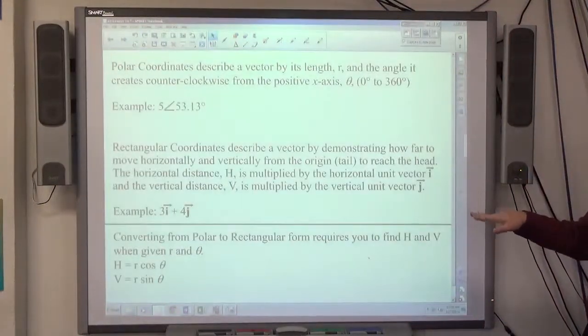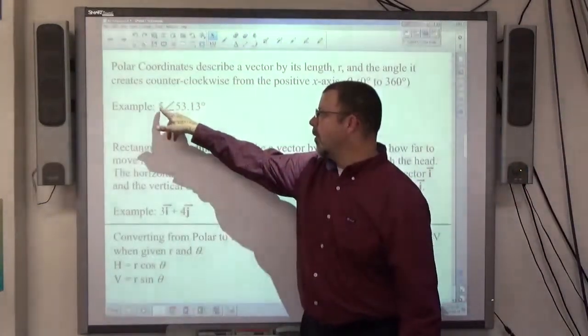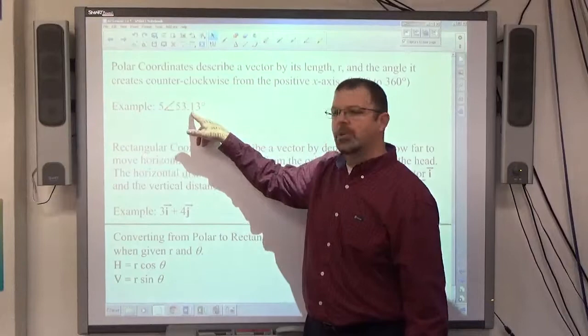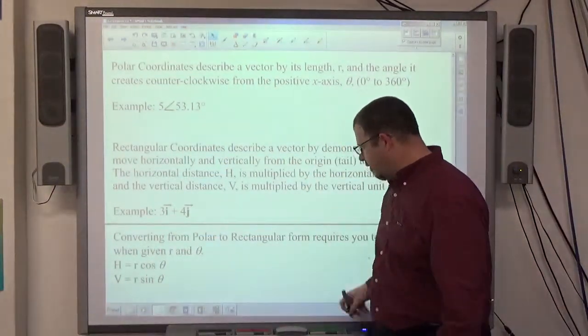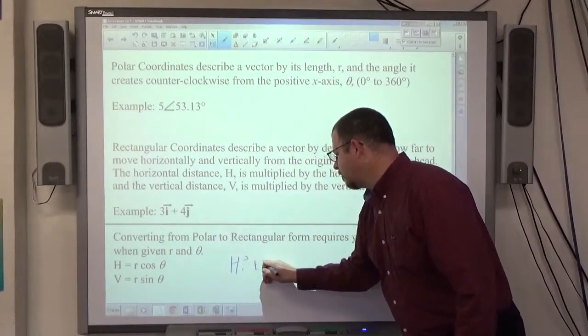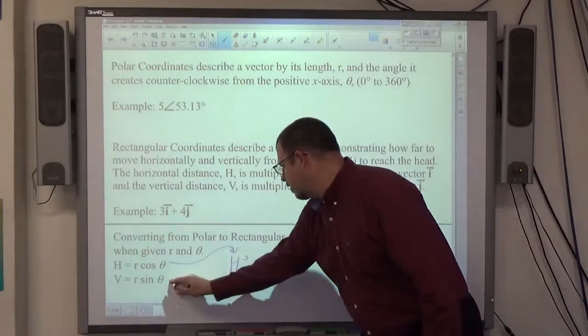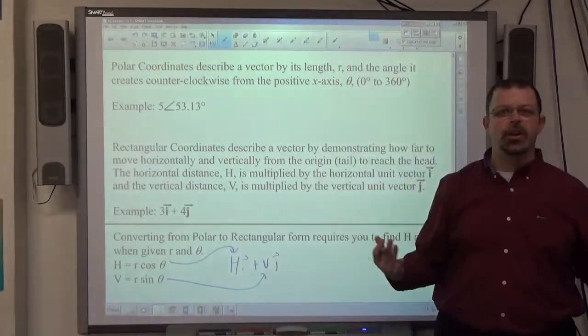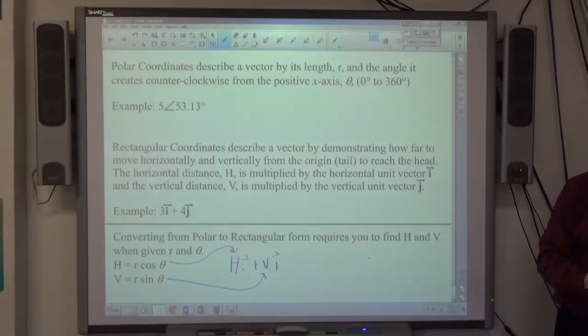All we have to do to convert from polar to rectangular form, they're going to give me the magnitude, which is r, and the angle, which is theta. I'm looking for the h and the v, so we're trying to convert to hi plus vj. H is r cosine of theta and v is r sine of theta. The two numbers they're going to give me, I just have to use my calculator to evaluate. Keep in mind your calculator must be set to degrees, not radians. These are not difficult, these are very, very easy.